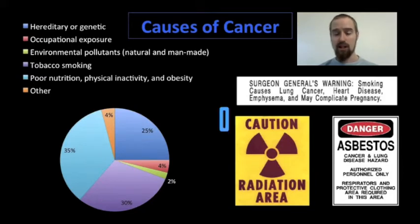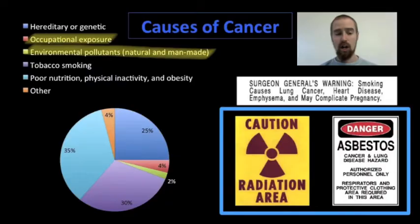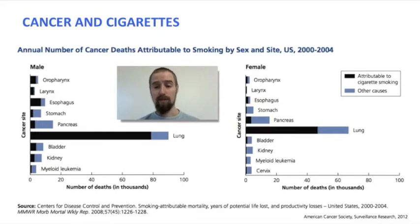Exposure to radiation and things like asbestos can cause mutations — mutations that may, if they occur in the right area of our DNA, cause cancer. It is important to note that even more than genetics, personal health and fitness choices have a big impact on our likelihood of developing cancer. We can choose to eat poorly or to eat well, to be inactive or to exercise, and to smoke or not to smoke. And our choices in these areas may ultimately determine whether or not we develop cancer in our lifetimes.